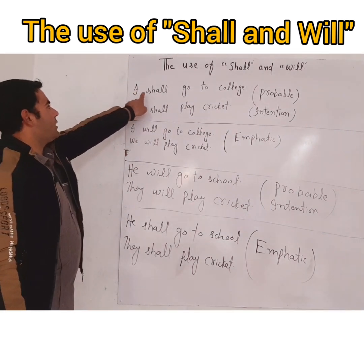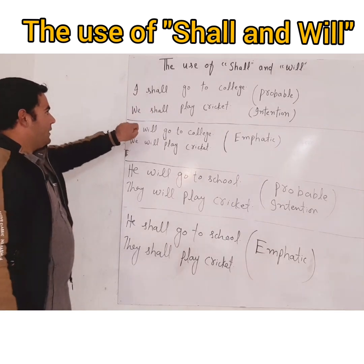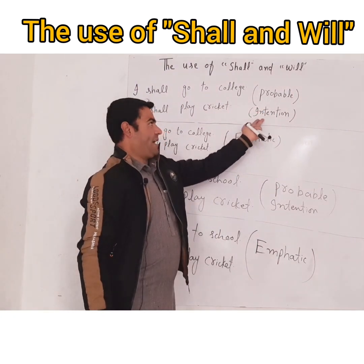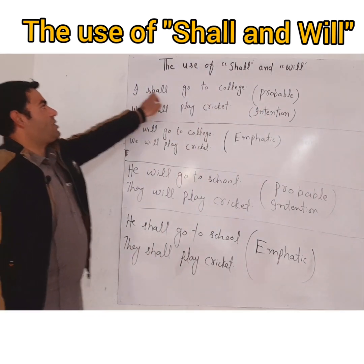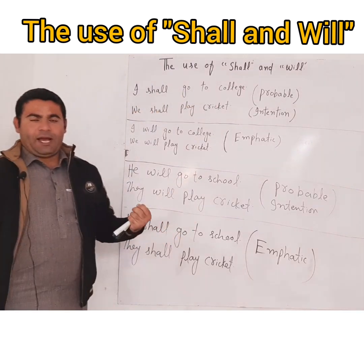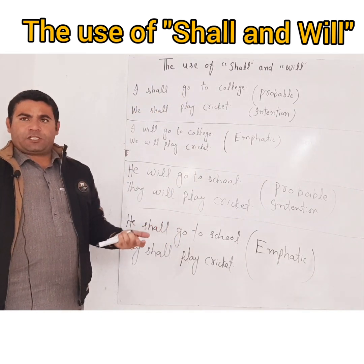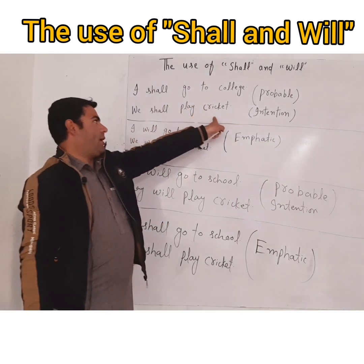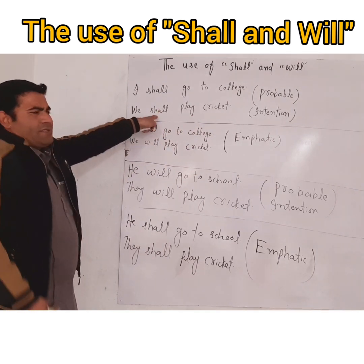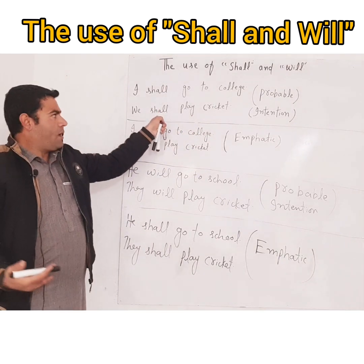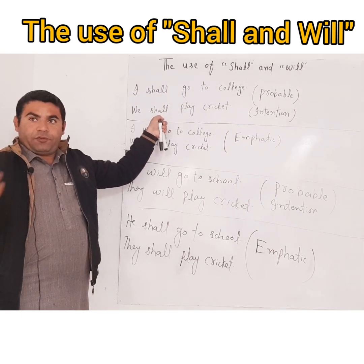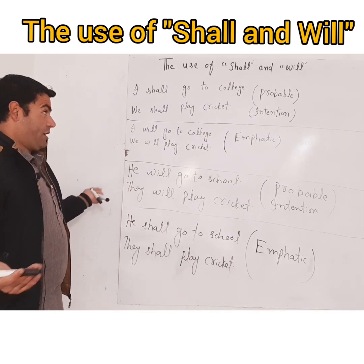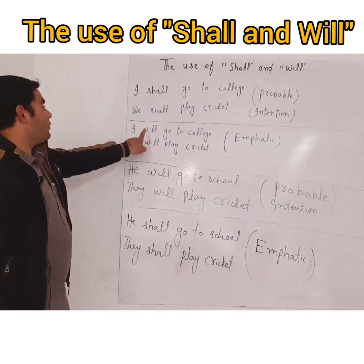When we use 'shall' with 'I' and 'we', it shows a probable situation — just intentions. For example: 'I shall go to school' means it is only my intention; maybe if it is raining tomorrow, I shall not go. 'We shall play cricket' — shall shows it is only an intention; anything can happen. If I wasn't feeling well, I won't play cricket.